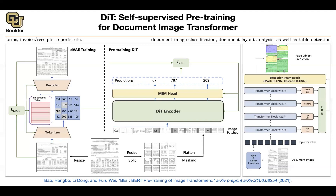Any questions about DiT? Was everything clear? If you didn't fully appreciate Mask RCNN, Cascade RCNN, or the feature pyramid network neck, don't worry too much about them. These are covered in part one of the course — they are beyond the scope of this topic here.